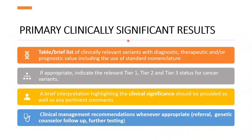For primary clinically significant results, we should list the clinically relevant variants with diagnostic, therapeutic, and/or prognostic value, including the use of standard nomenclature like HGVS nomenclature.